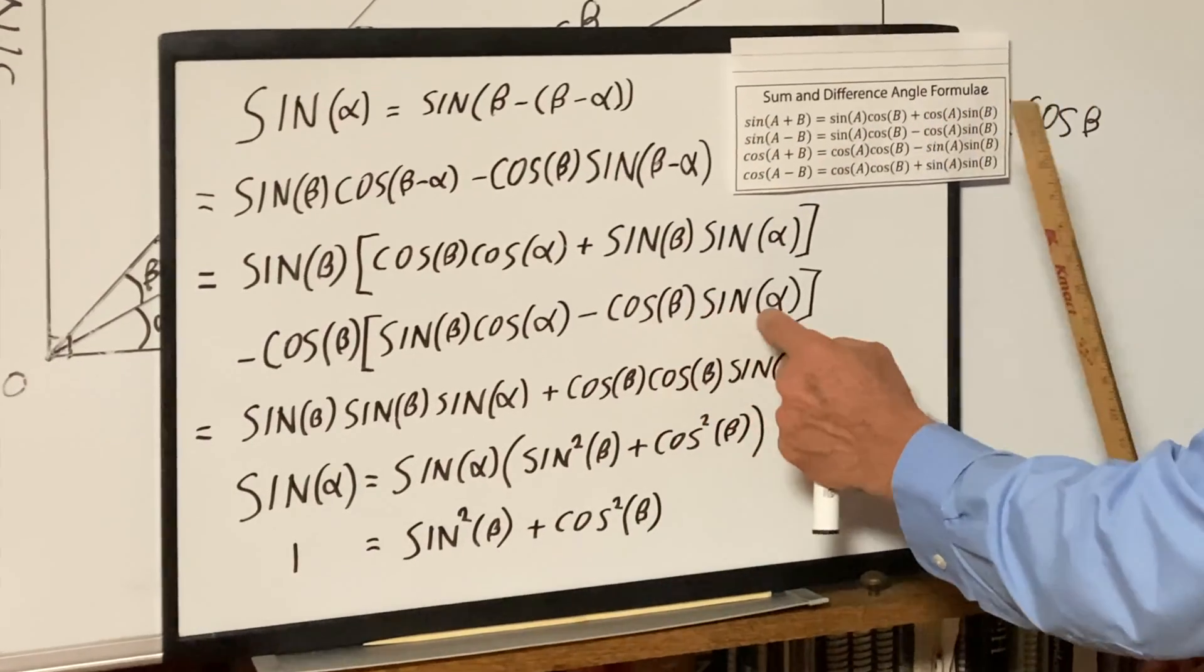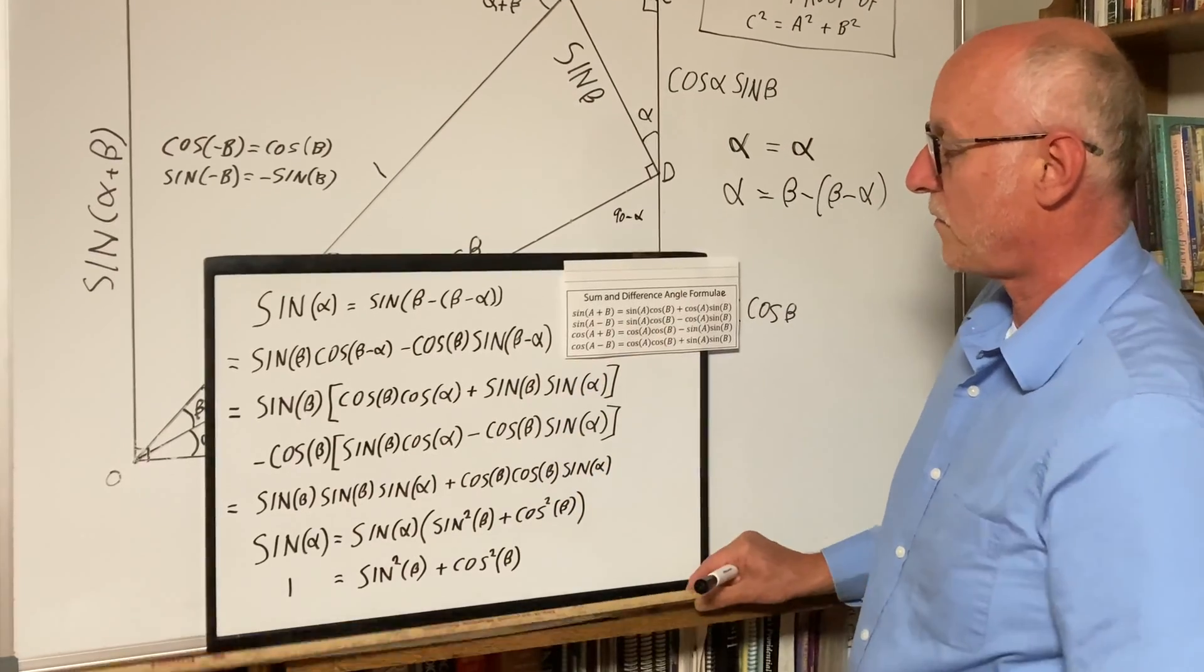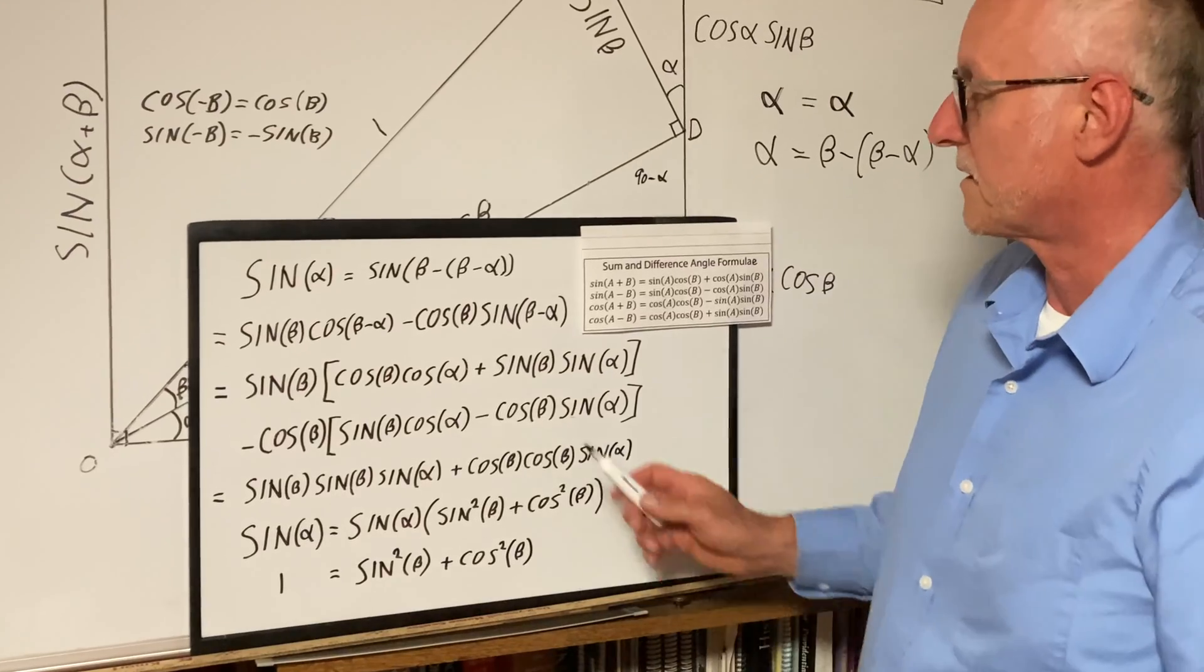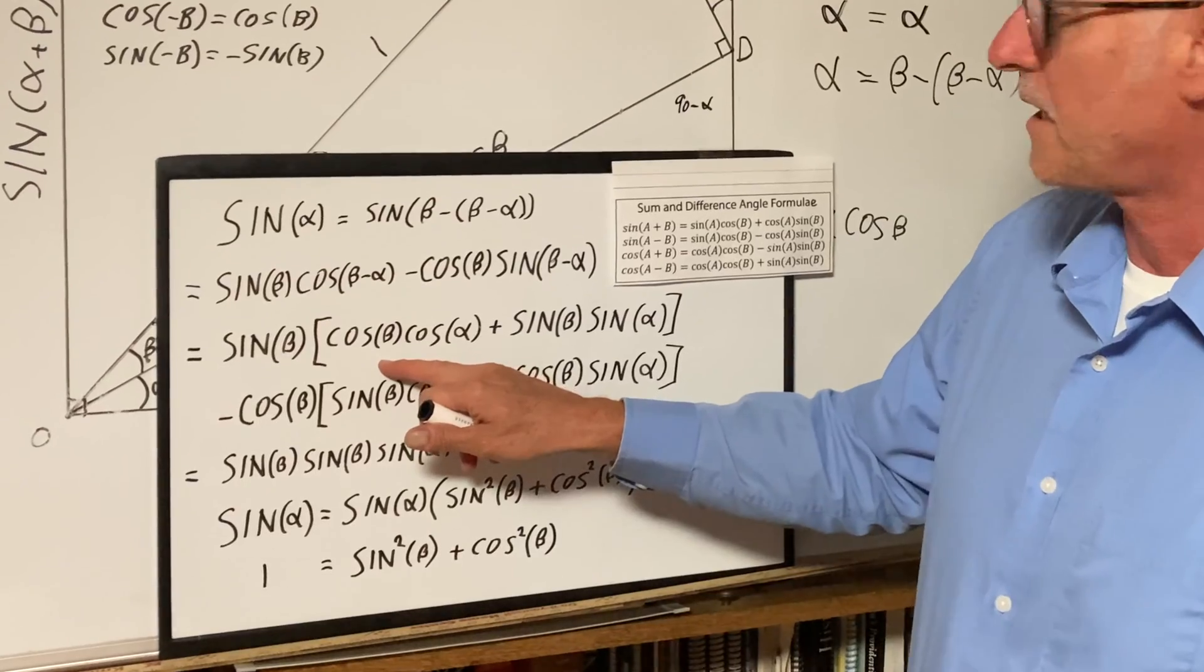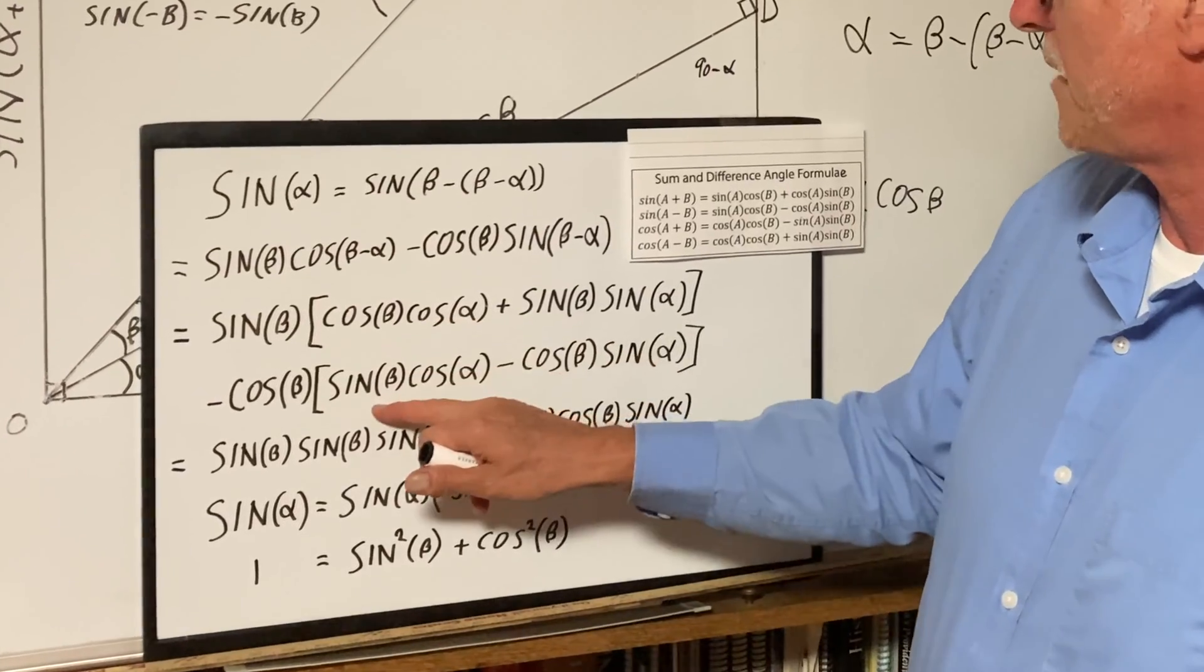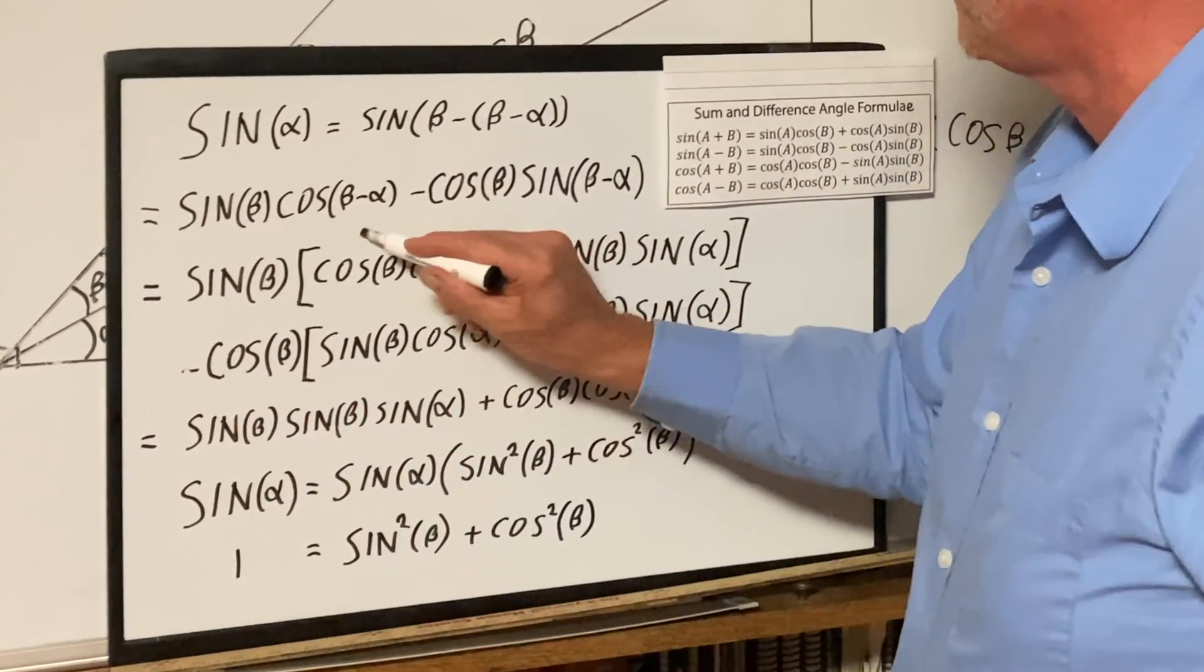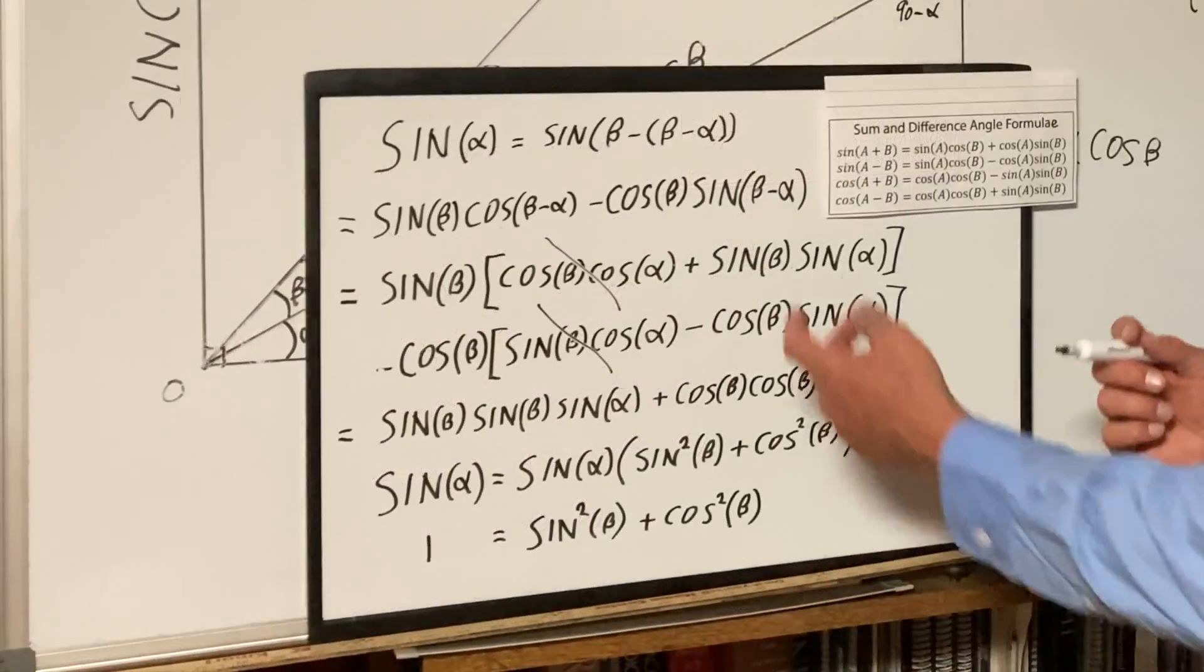And fortunately for us, there's a cancellation that happens. Sine beta cosine beta cosine alpha, and sine beta cosine beta cosine alpha with a negative sign, so this one cancels this one.